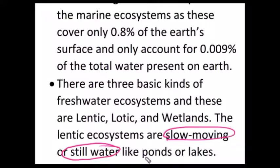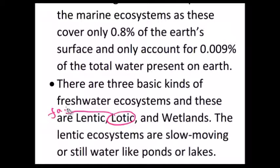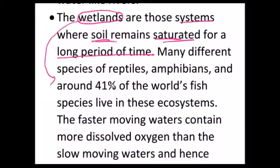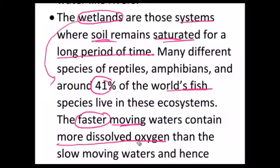Lentic means water which is slowly moving or not moving at all — examples are freshwater in ponds and lakes. Lotic is nothing but fast-moving water — water present in rivers is an example of lotic. Wetlands are ecosystems where soil is saturated with water for a longer period of time. Wetland is rich in biodiversity — around 41% of the world's fish species live in wetlands. Fast-moving water contains more dissolved oxygen than slow-moving water — this is another important prelims point.